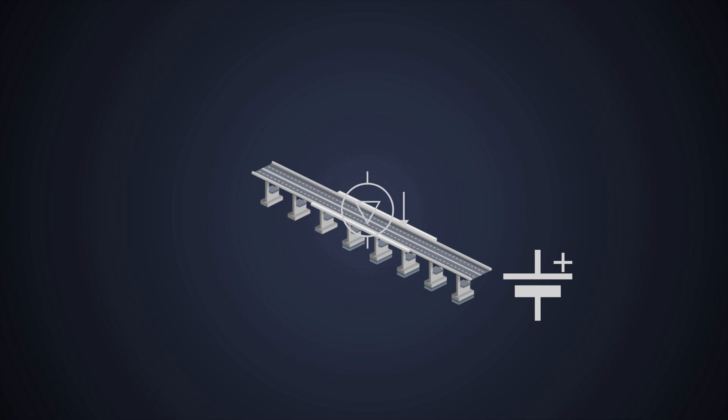Think of it as a magical bridge that connects current signals to voltage signals, which is very important in applications like photodetectors where we need to convert light into an electrical signal. Want to know more about it? Let's go!